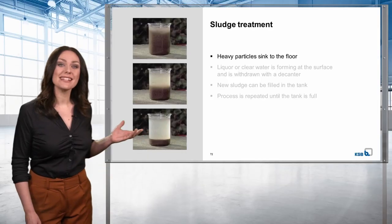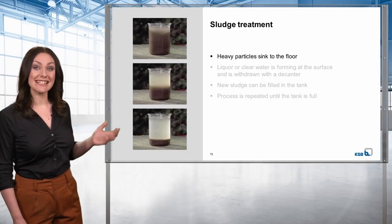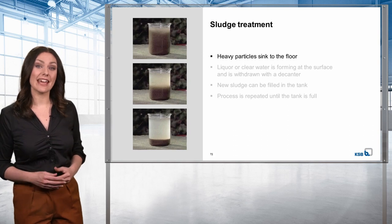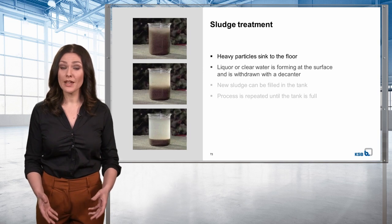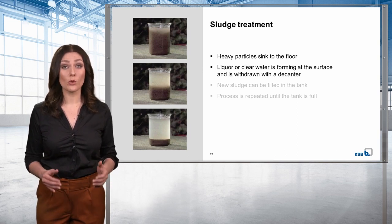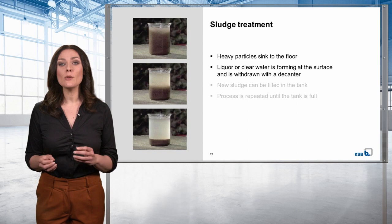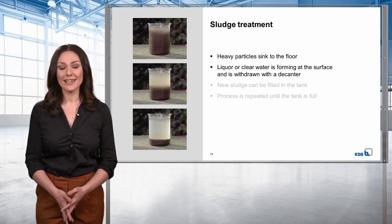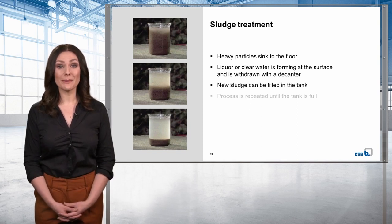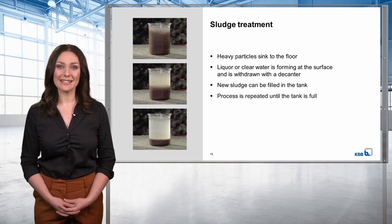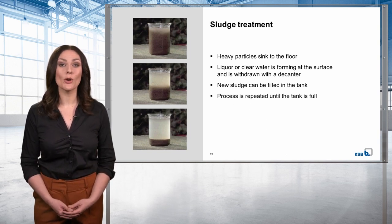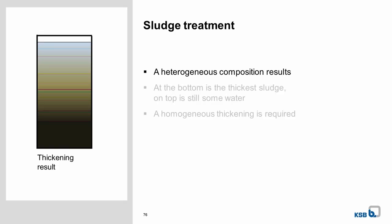Here you can see a classic thickening process in detail. In the sludge tank, the sludge remains untouched until the heavy particles have sunk to the floor. The so-called liquor or clear water forming at the surface is then withdrawn with a decanter. This creates more storage volume in the tank that can be filled with new sludge. The process is repeated until the tank is full and no more liquor can form.